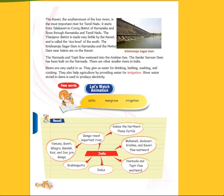It starts from Tala Kaveri in Coorg district of Karnataka and flows through Karnataka and Tamil Nadu. The Thanjavur district is made very fertile by the Kaveri and it's called the rice bowl of the south.